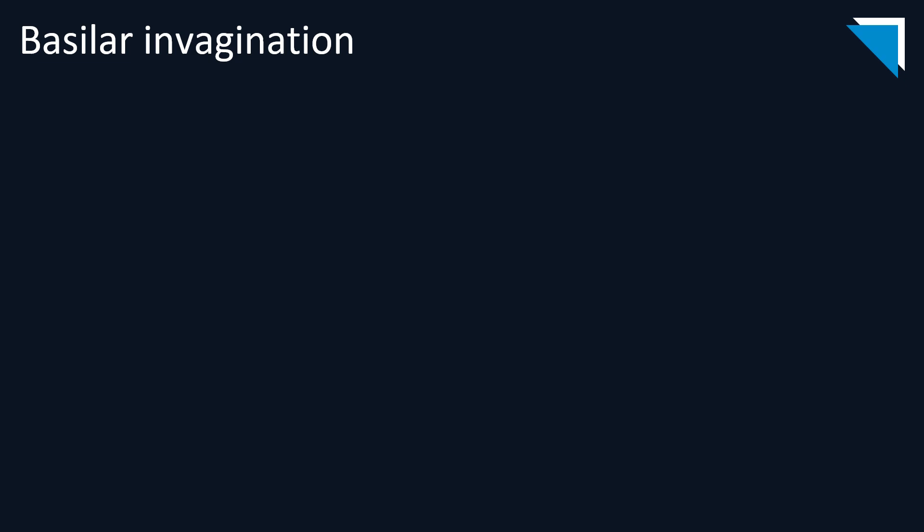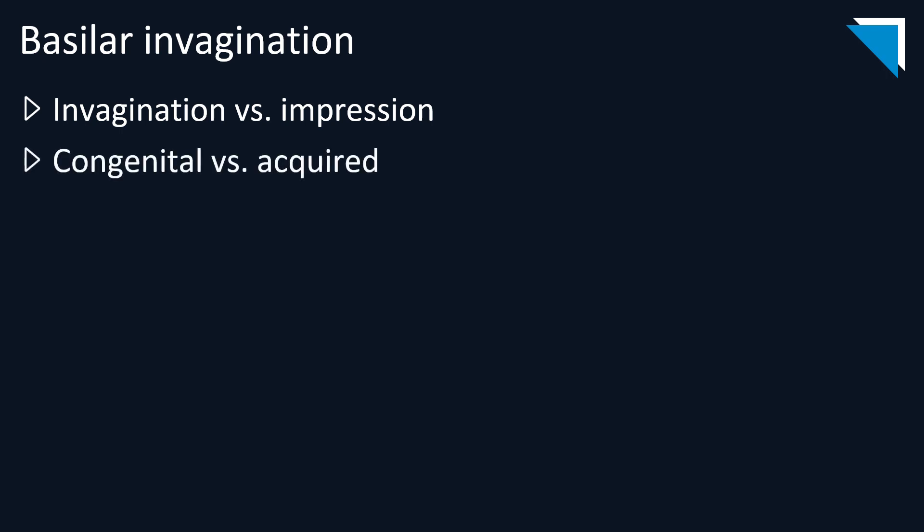A few brief words about basilar invagination: when we use the term invagination we're talking about someone with a congenital superior displacement of the dens and normal underlying bone, whereas impression refers to an acquired condition with underlying osteomalacia. I find the mnemonic PF ROACH useful for acquired cases: Paget's disease, fibrous dysplasia, rheumatoid arthritis, osteogenesis imperfecta, achondroplasia, Chiari malformations, and hyperparathyroidism.